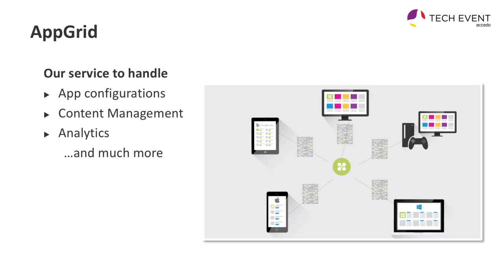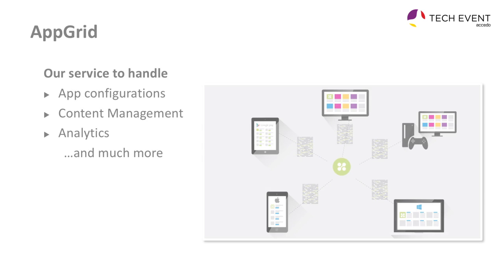App Grid used to be our biggest monolith at Exida. It's a service to handle app configuration, content management, and analytics — basically a back end for our apps. You do configuration changes and the user starts their app and gets the latest content. Right now we have around half a billion requests each month, which is four times as much as last year, and it works fine.